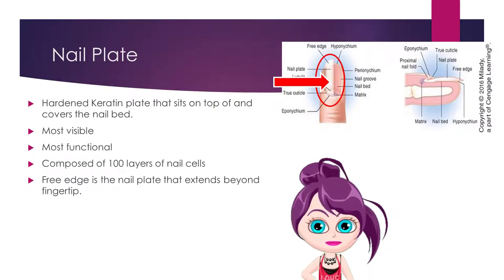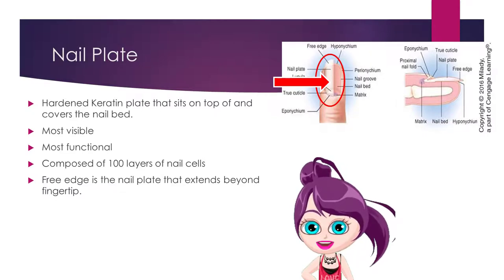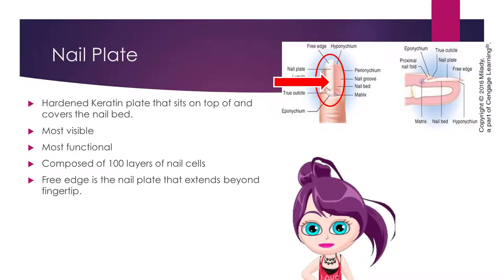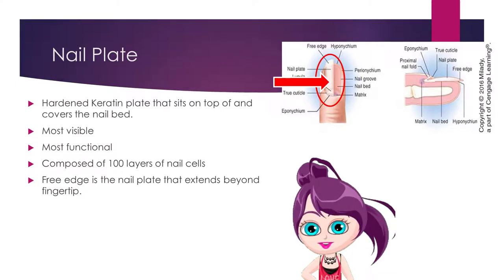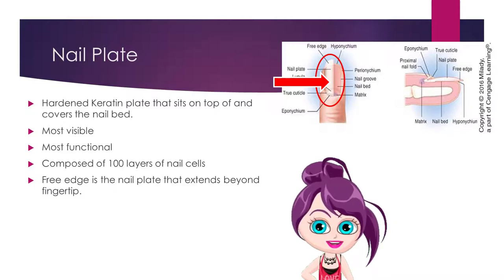The nail plate is composed of hardened keratin. It is a plate that sits on top of and covers the nail bed, and is the most visible and most functional portion of the nail. The nail plate is composed of hundreds of layers of nail cells. The free edge is the portion of the nail plate that extends beyond the fingertips.